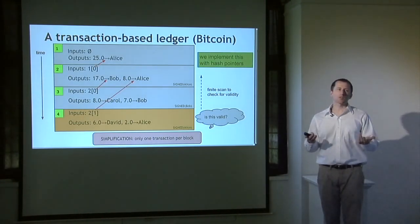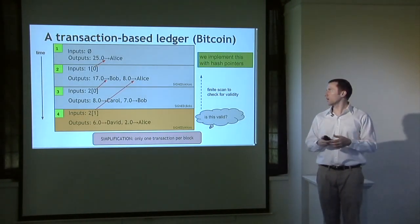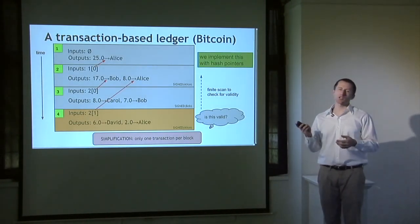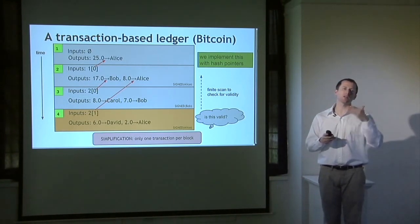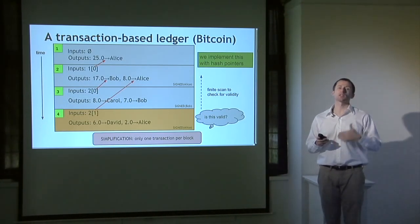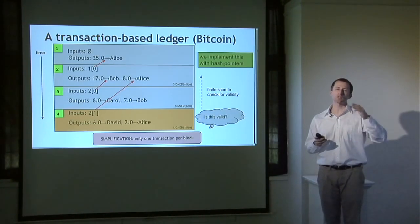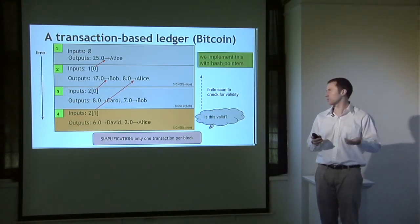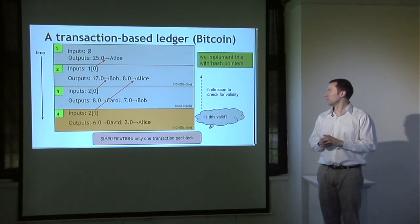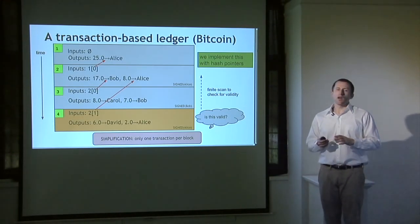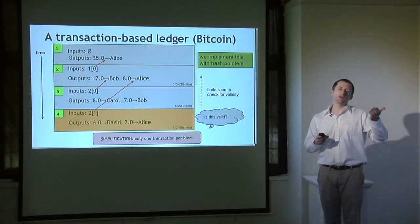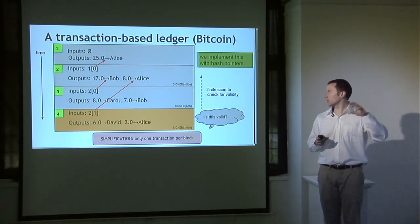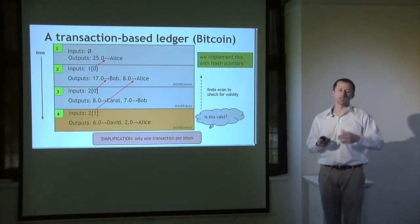We implement this with hash pointers. Each transaction has a unique ID — in reality not serial numbers, but the hash of the transaction. It's basically just following one pointer to figure out whether there's enough money to cover the desired outputs in the new transaction. This is conceptually similar to maintaining a separate data structure tracking account values, but the nice thing is that this data structure is embedded within the blockchain data itself.